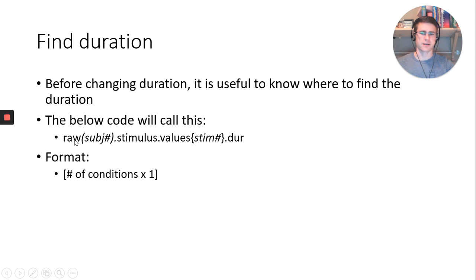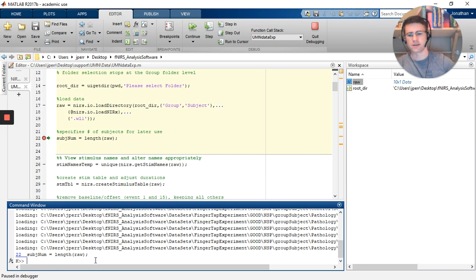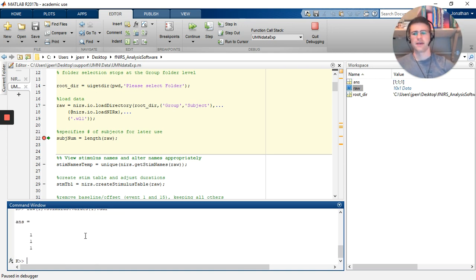Or you can call it in the command line. Here I have my raw variable, which is what I saved my data as. I'm going to select a subject number, do .stimulus, .values, curly brackets, and select which stimulus I want. We have two stimuli in this condition. This was a left and right finger tapping test. So raw, select my subject, subject 1, .stimulus, .values, curly brackets, trigger number 1, .dur. When I hit that, I get a return of one column with three rows. This tells me I have three occurrences of that stimulus, each with a duration of one second.